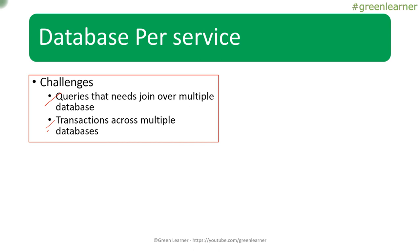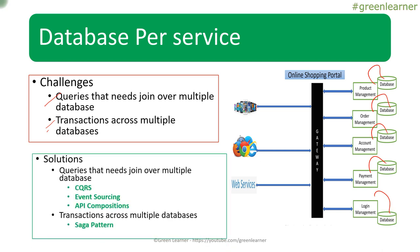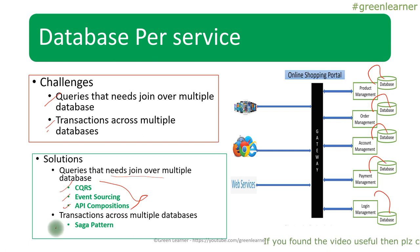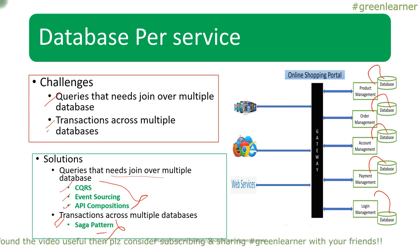So how do we solve these challenges? Each service has a separate database. For query challenges — data that needs joins over multiple tables — there are strategies we can follow: CQRS, event sourcing, and API composition. These are patterns that solve this challenge effectively. When we talk about transactions, the saga pattern comes into picture, which resolves transaction concerns very effectively. We are going to talk about CQRS, event sourcing, API composition, and saga pattern in detail in upcoming videos.